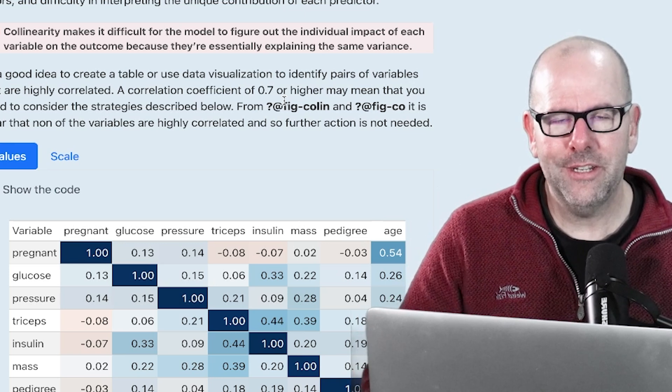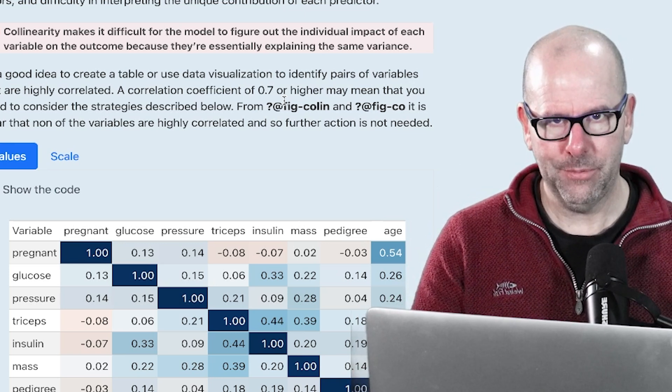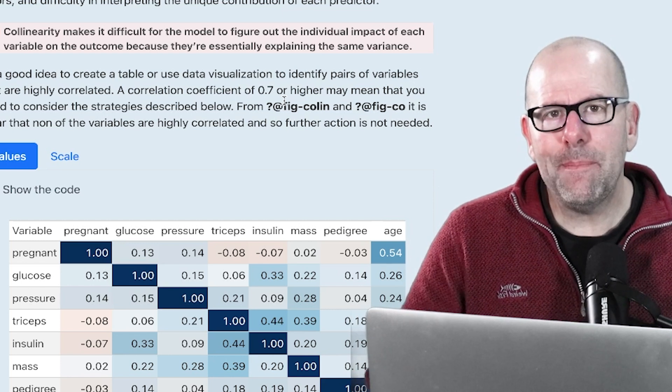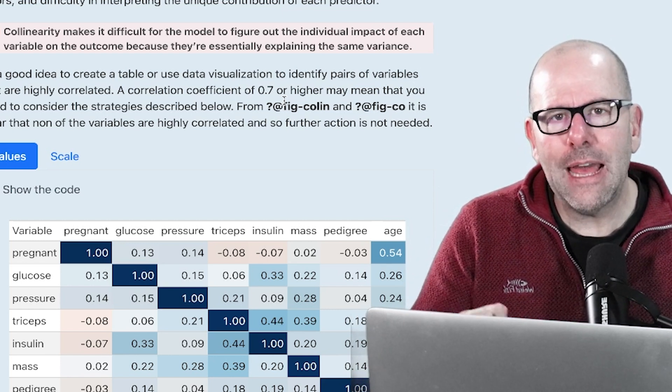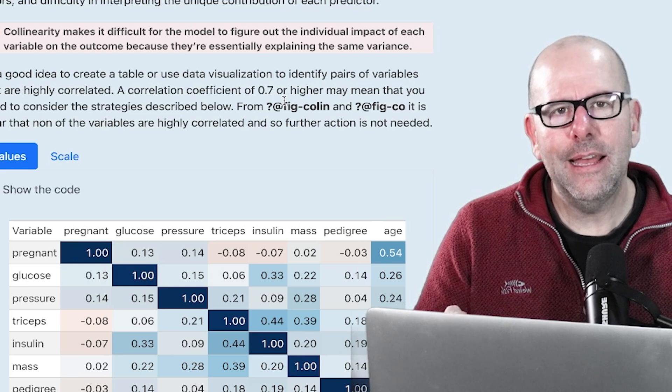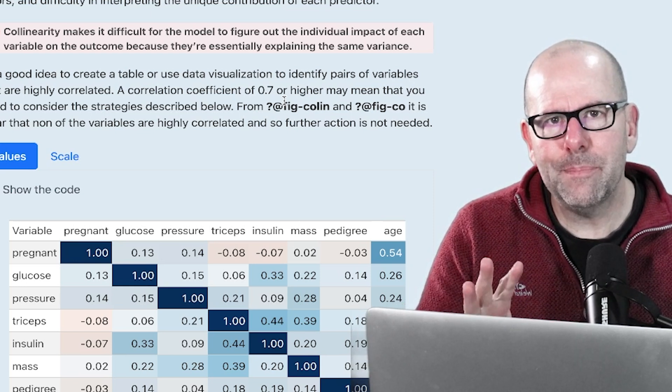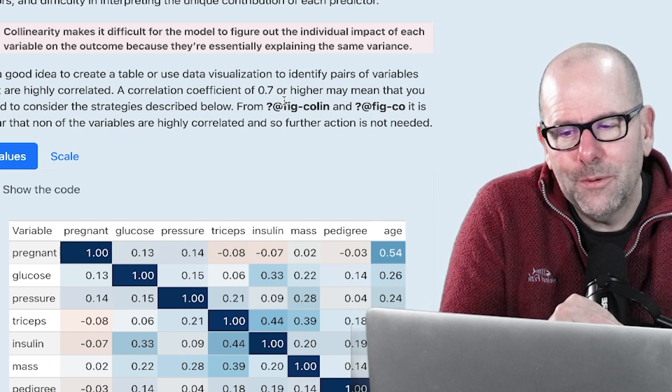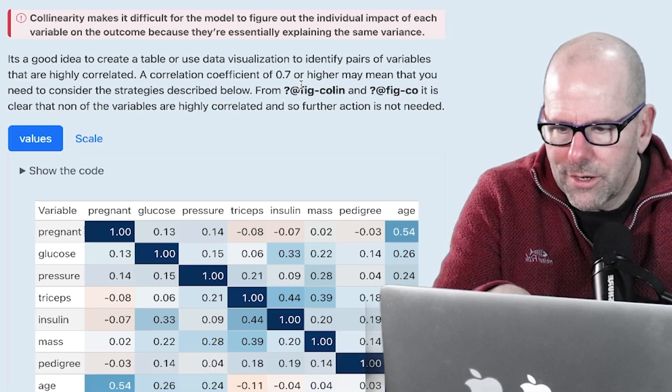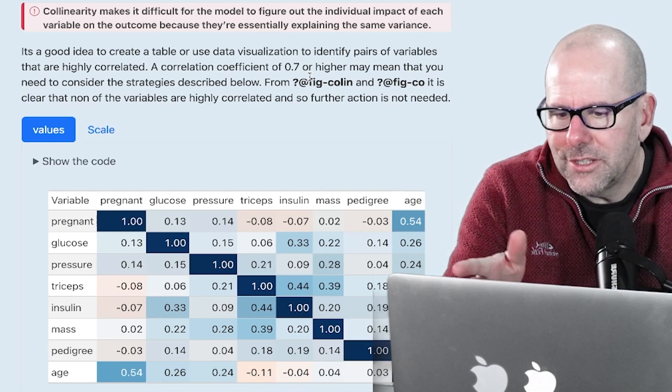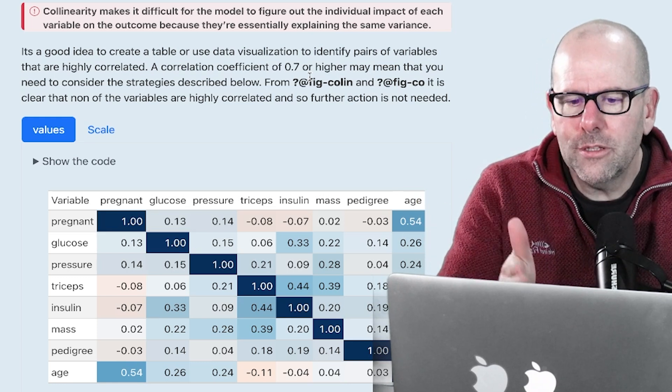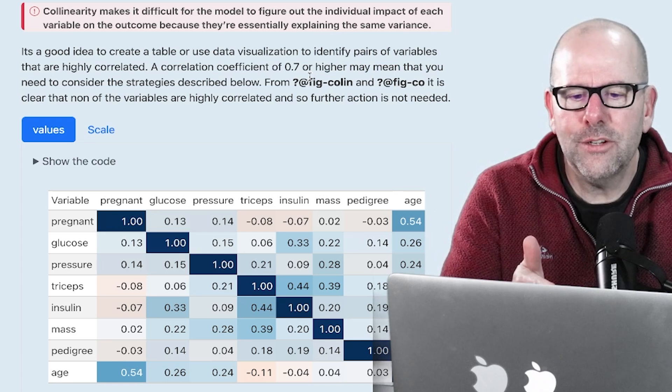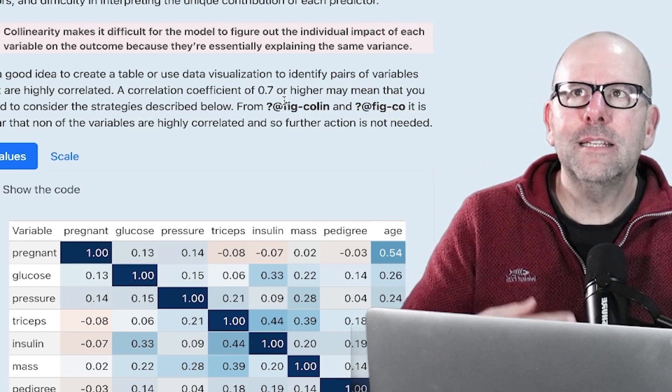What is collinearity? If two of your predictive variables are very highly correlated, it may mean that baked within them there is overlapping information that befuddles our understanding of the relationship between those variables and the outcome variable. The best way of framing it is what I've got on the screen at the moment. Collinearity makes it difficult for a model to figure out the individual impact of each variable on the outcome because they're essentially explaining away the same variance.